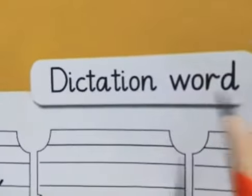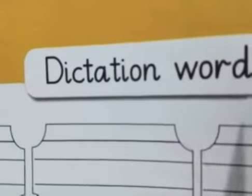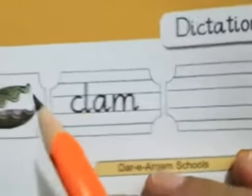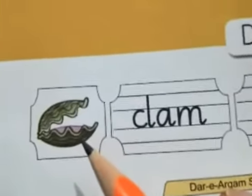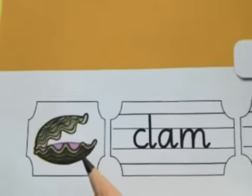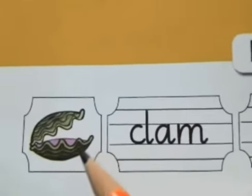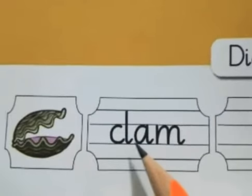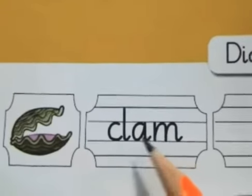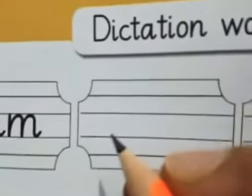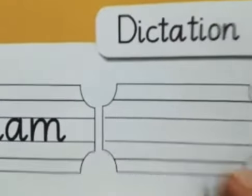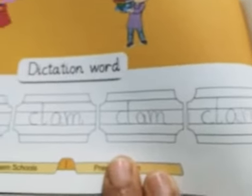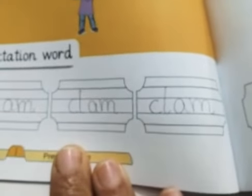Dictation words. So we will write: what is this letter? Clam. C-L-A-M. We will write clam like this — one time, two time, three time.